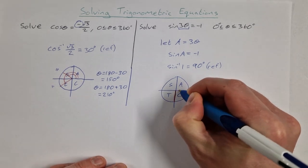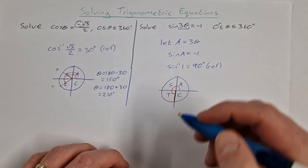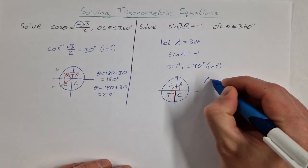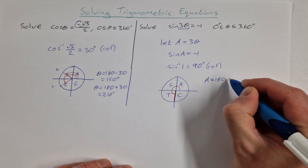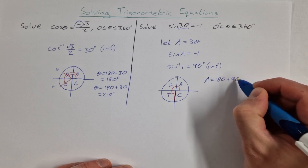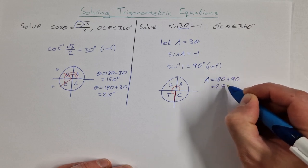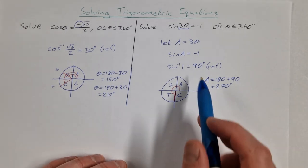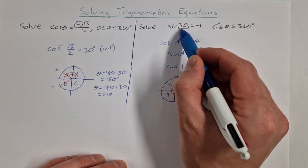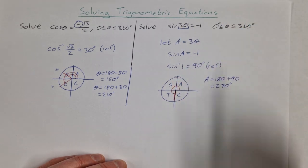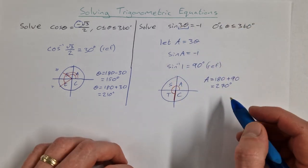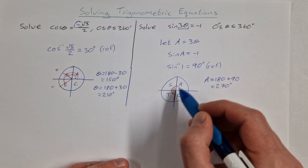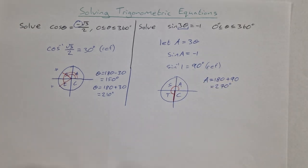It's this angle here. So that angle is A is equal to 180 plus 90, which is equal to 270 degrees. Now, that's only our first angle because we have 3 theta, we actually have 3 more sets of angles. Usually you'd get 2 angles, but because 90 degrees is on an axis, you only get the 1.